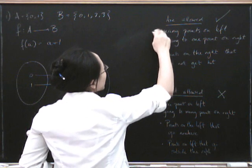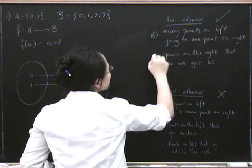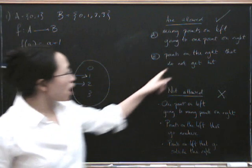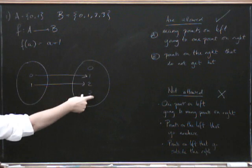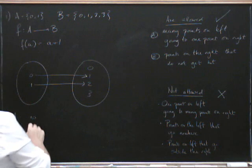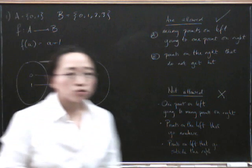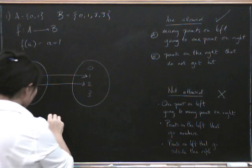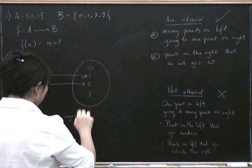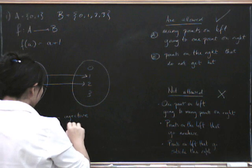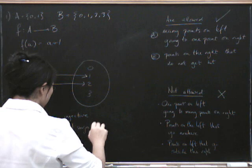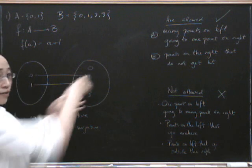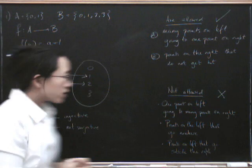Let me call the first property A and the second property B. Does A occur? No. What about B - are there points on the right that do not get hit? Yes, there are points on the right that do not get hit, because 0 and 3 do not get hit by anything. So this means it's going to be injective, and this one means we are not surjective. If we had added more points that did go over to 0 and 3, then we could have been injective and surjective.